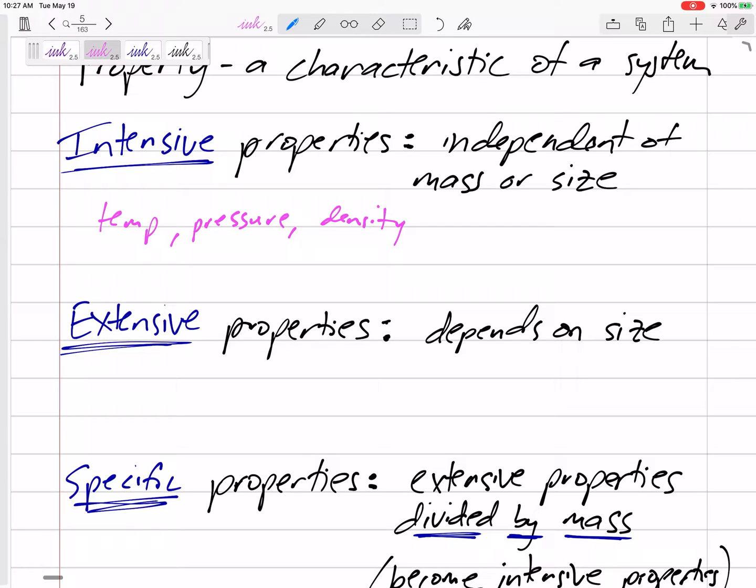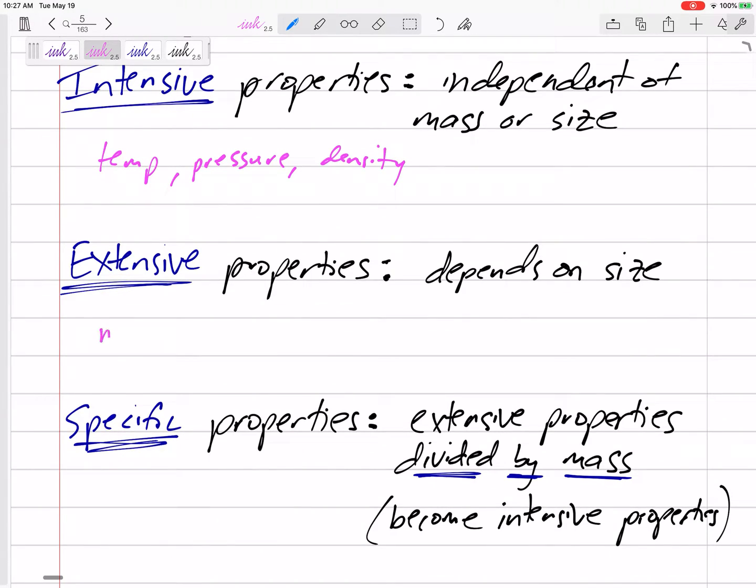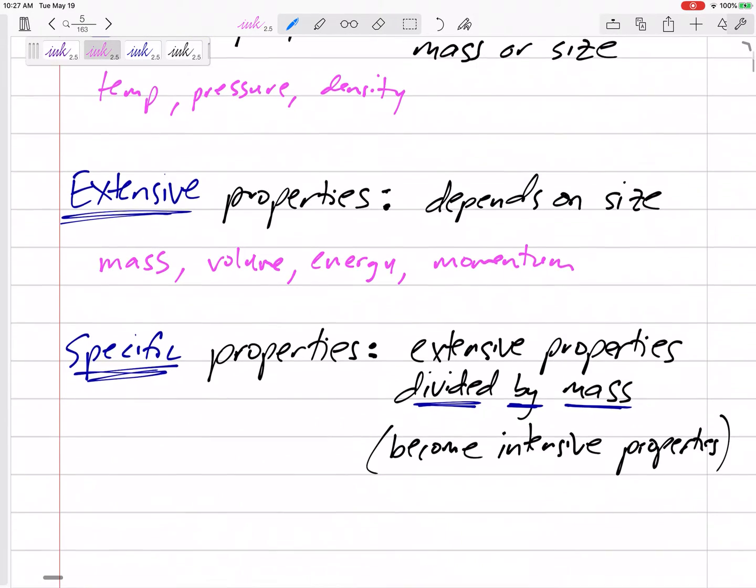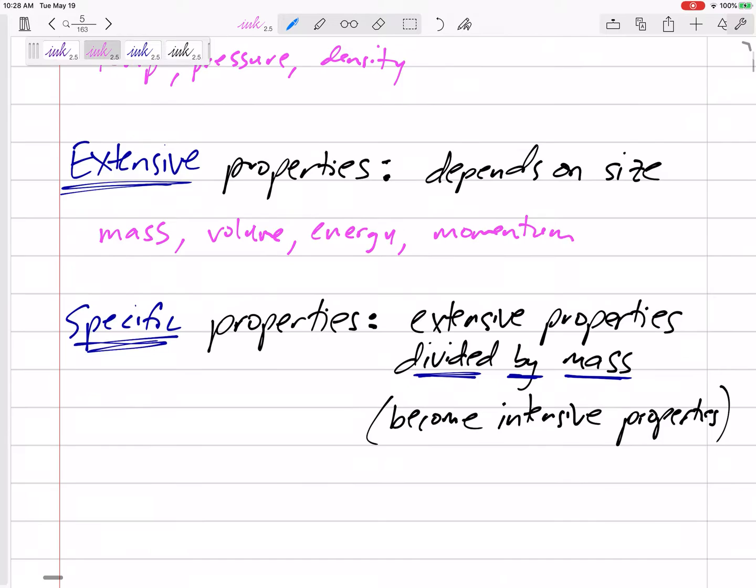But extensive properties are dependent on size, such as mass. If I have more of something, I'm gonna have more mass, volume, energy, momentum. Those aren't intensive, right? Those aren't intensive. Those are extensive. Those matter whether we have a little or we have a lot.